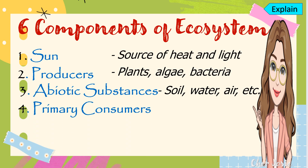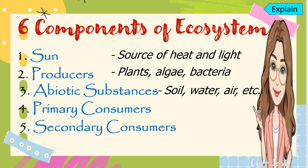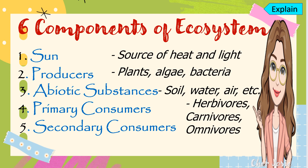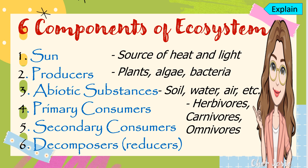Number four, we have primary consumers, and we also have secondary consumers. They can be in the form of herbivores — animals that eat plants — carnivores — animals that eat meat — and omnivores, which can eat both plants and animals. The sixth component is the decomposers, also called reducers. For example, we have fungi.